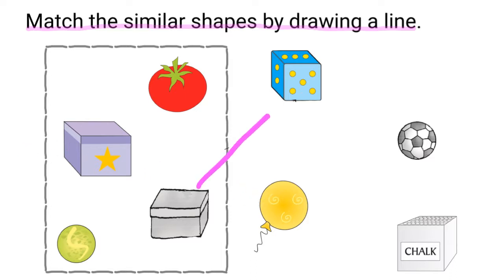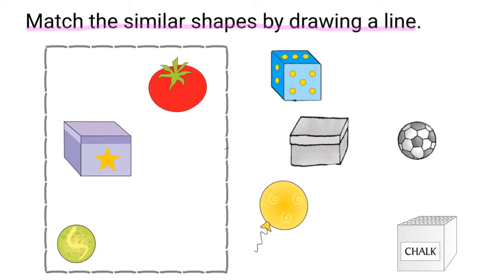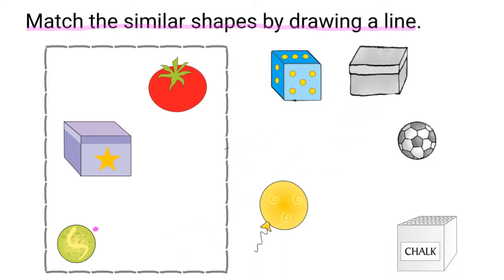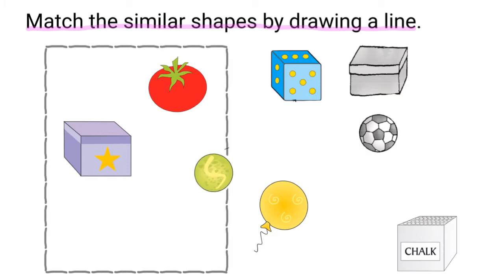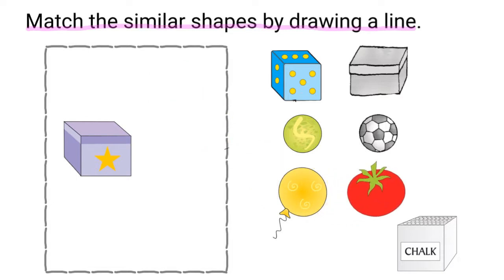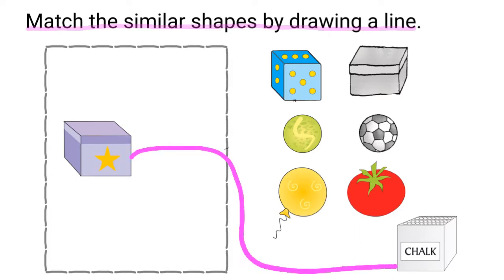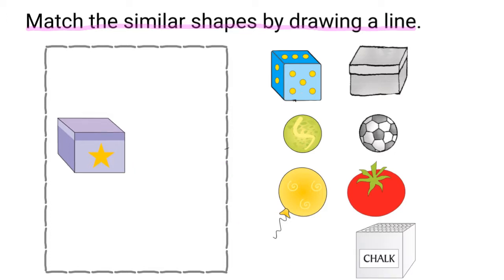This box and the dice look the same, so I will match them like this. This tennis ball and this football look the same, so I will match them like this. This box and the chalk box look the same, so I will match them like this.